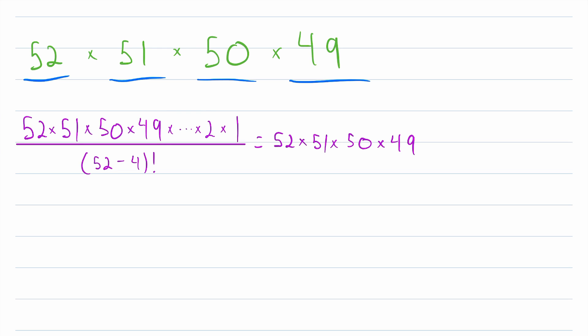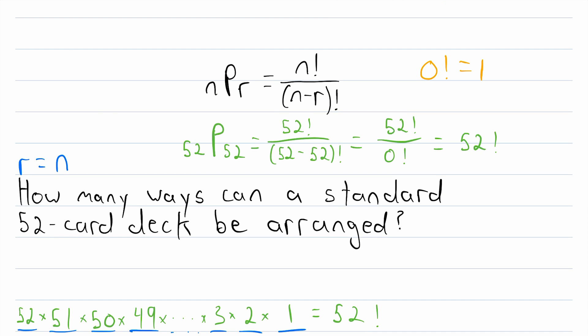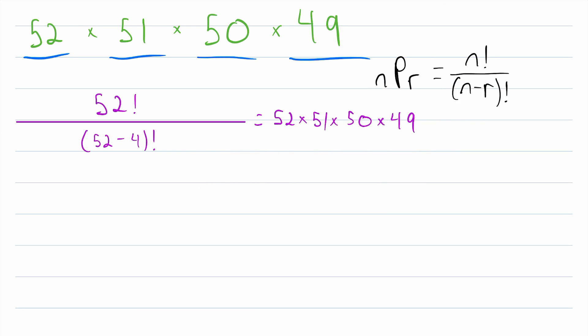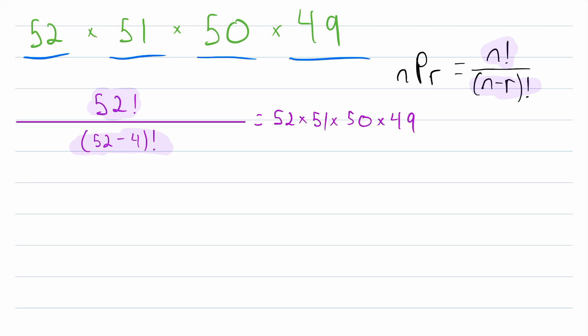And then, of course, in the numerator all along, we've just had 52 factorial. So let's go ahead and rewrite that as well, just so this really looks like the formula that I showed you originally. And there we go. Hopefully, you can see where the formula is coming from now. The number of ways we can order r objects from a collection of n is n factorial divided by n minus r factorial.